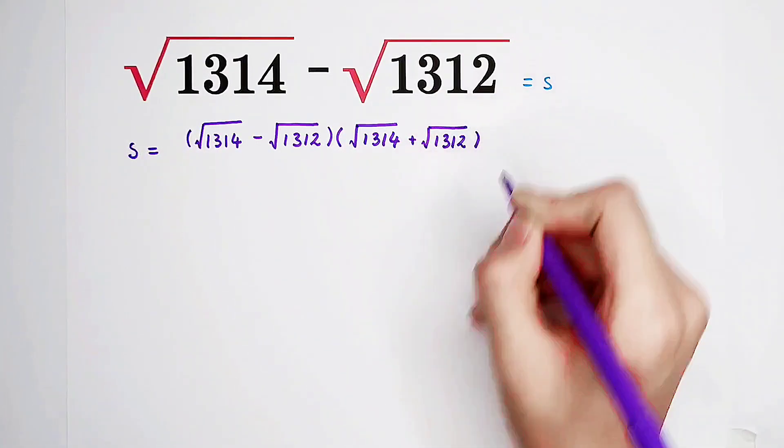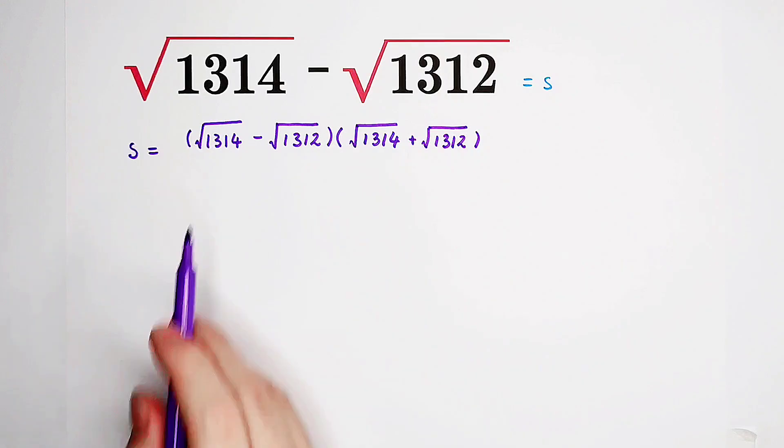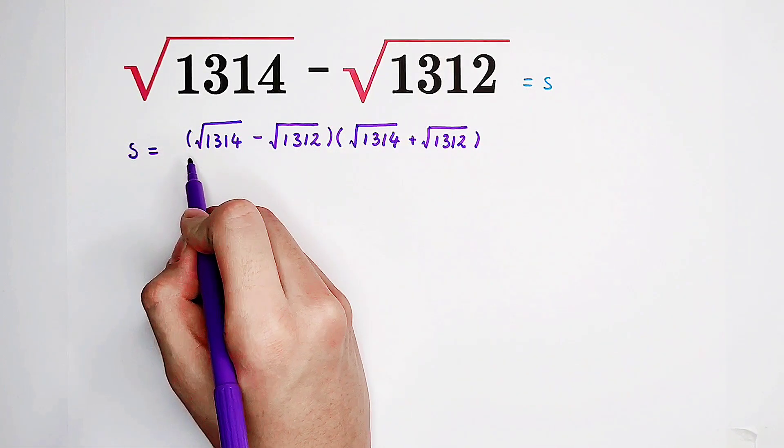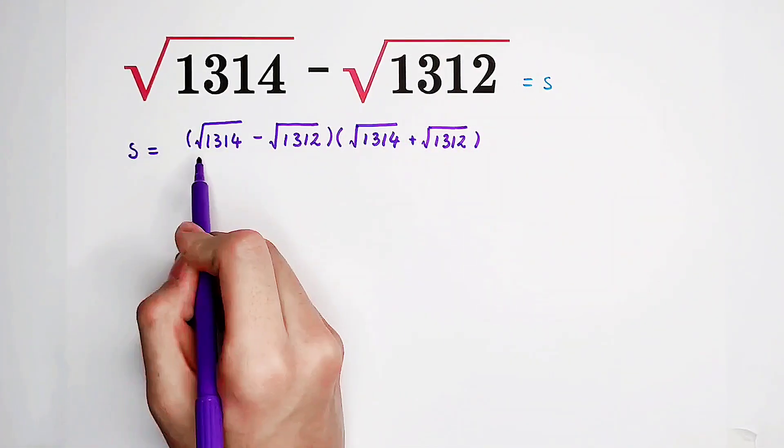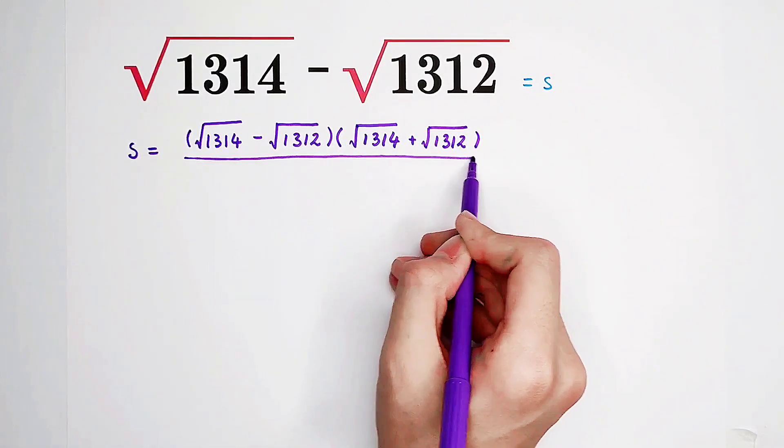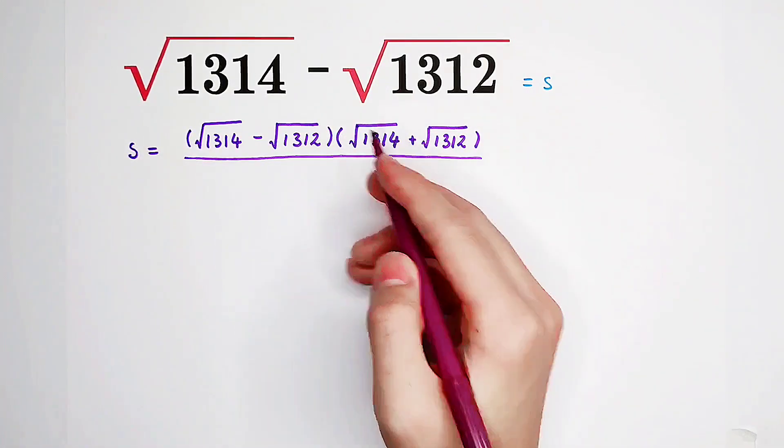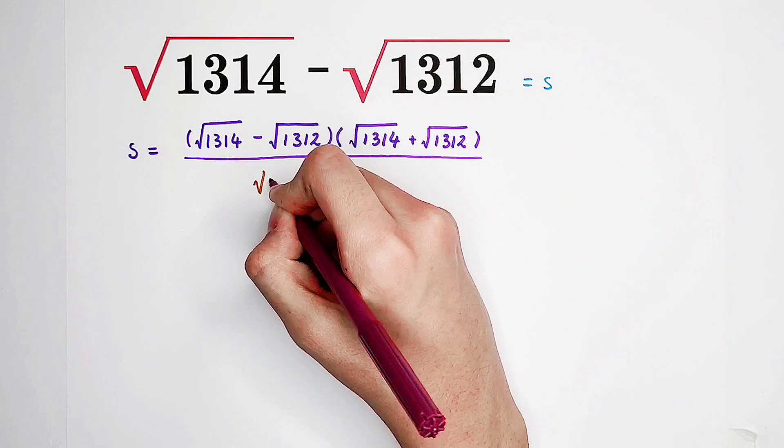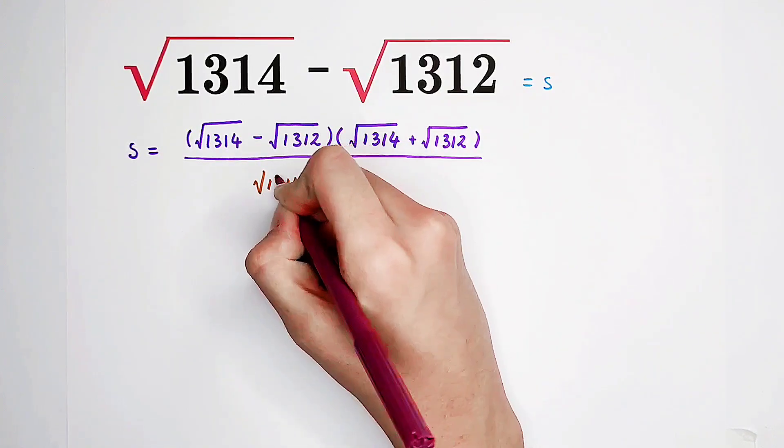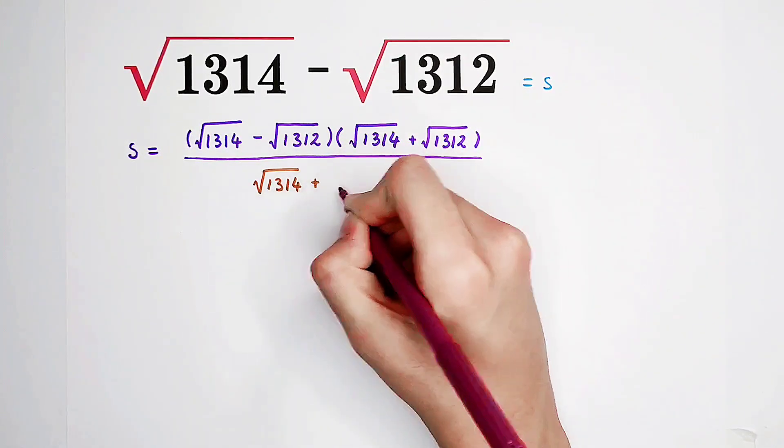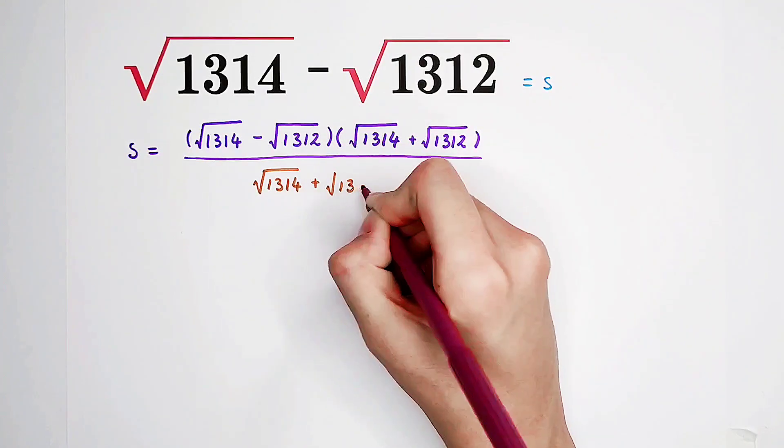We've multiplied this guy times it. Then we have to divide by this guy. Square root of 1314, plus square root of 1312.